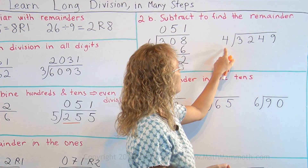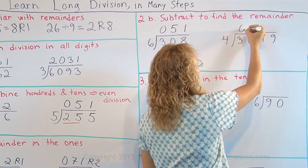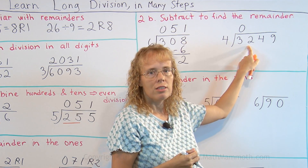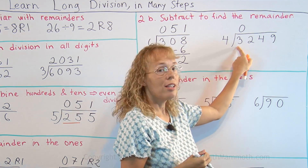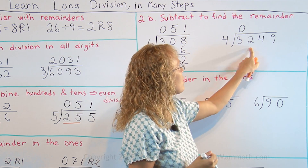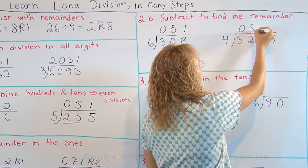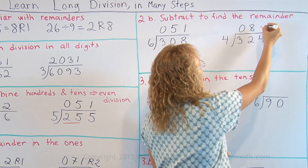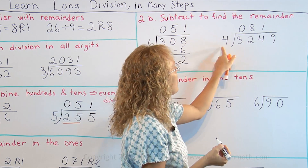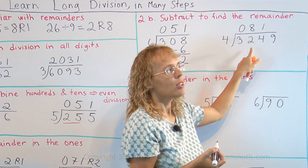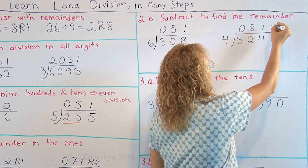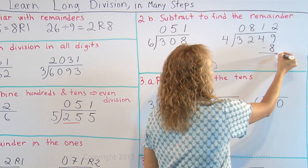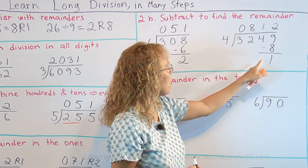Here, 4 does not go into 3, so we combine the 3000 with the 200s to get 32 hundreds. 4 goes into 32 eight times. Then 4 goes into 4 once. In the ones it is not an even division: 4 goes into 9 two times. We then subtract — 2 times 4 is 8 — to find the remainder of 1.